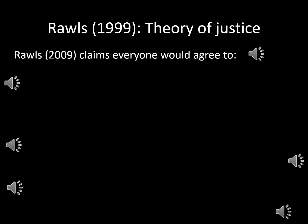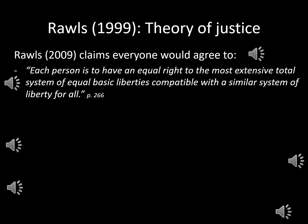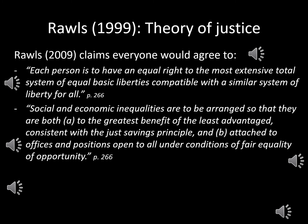Rawls argued that any party would adopt two such principles from this hypothetical position. First, inspired by Kant, each person is to have an equal right to the most extensive total system of equal basic liberties compatible with a similar system of liberties for all. And second, social and economic inequalities are to be arranged so that they are both (a) to the greatest benefit of the least advantaged, consistent with the just saving principle, and (b) attached to offices and positions open to all under conditions of fair equality of opportunity.